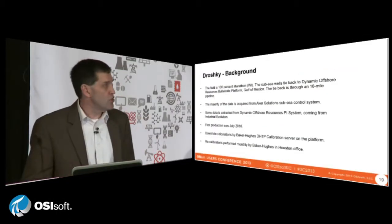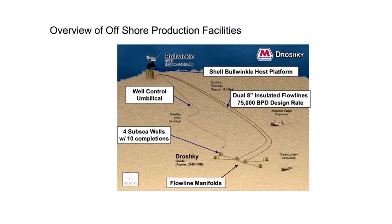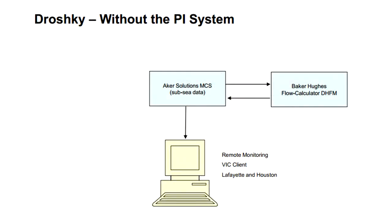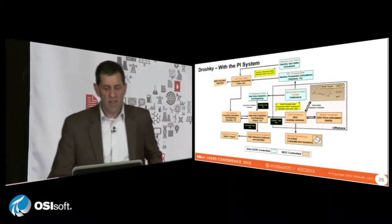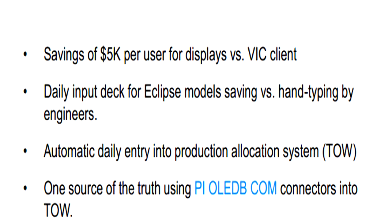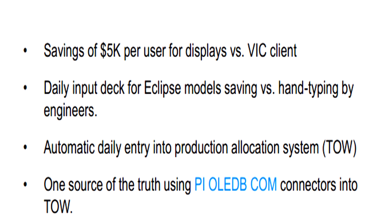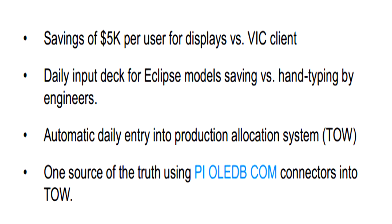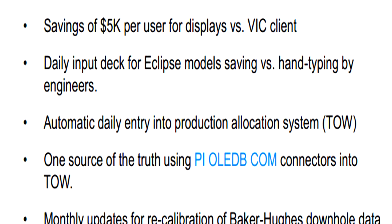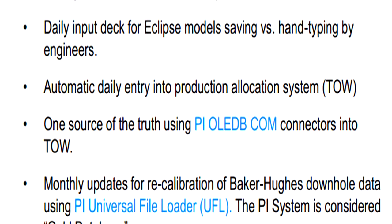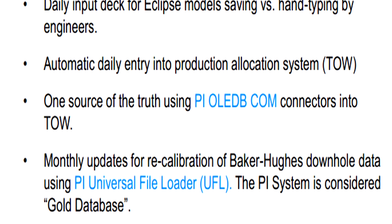Our second use case is Droshke, which was a large asset in the Gulf of Mexico. Without the Pi system, just one person would have been able to see what's going on. Now with the Pi system, we've got a totally integrated system. We're doing subsurface modeling with an automatic channel created to the Kappa modeling suite. We control a daily input deck for Eclipse models, saving hand typing by engineers. We've got automatic daily entry into the production allocation tow.